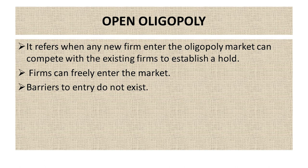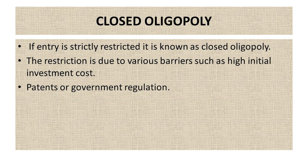Firms can freely enter the market in open oligopoly, and barriers to entry do not exist. The next is closed oligopoly. If entry is strictly restricted, it is known as closed oligopoly. The restriction is due to various barriers such as high initial investment costs, patents, or government regulations.